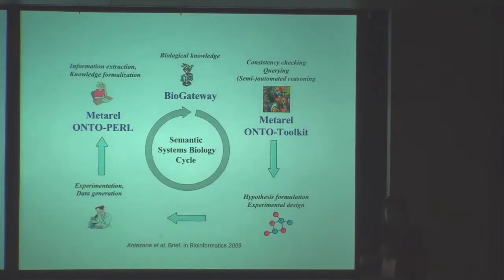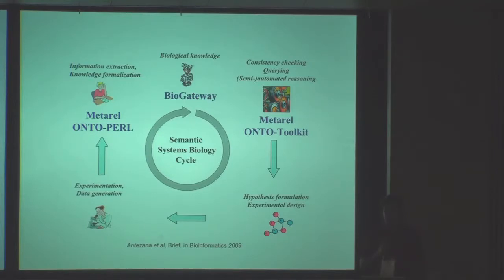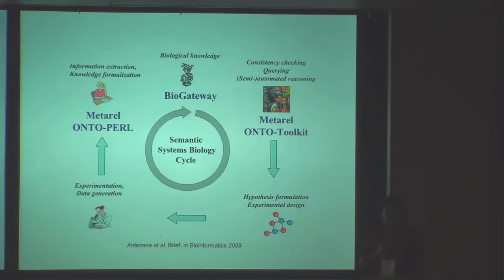I'm going to talk quickly about the tools and resources we have been building. Some of you know the classical systems biology cycle where we begin with a biological model. In our case, what we have built is a knowledge base called BioGateway — which, contrary to what was just presented, is still a warehouse due to known limitations. This is our starting point: biological knowledge. We do consistency checking, retrieval, and also some semi-automated reasoning.